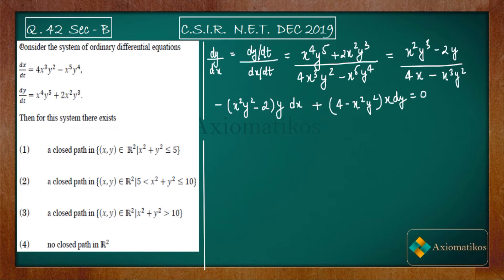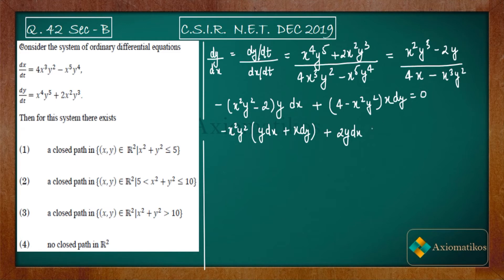You can see that x²y² appears on both sides. Choosing it as a common factor and taking a minus sign outside, you get: x²y²(y dx + x dy) equals the remaining terms 2y dx + 4x dy. The key observation here is that y dx + x dy is exactly the derivative of xy, that is, d(xy).